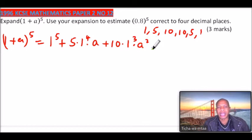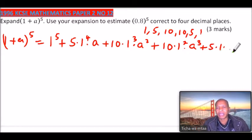So we have plus 10·1^2·a^3. Then we have plus 5·1^1·a^4, and finally we have a^5.